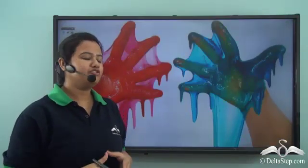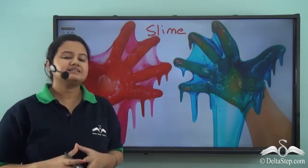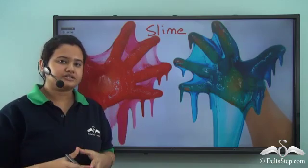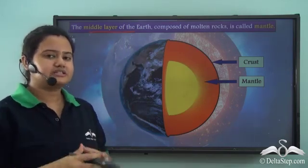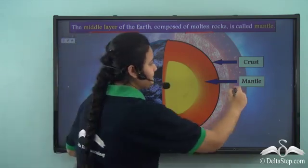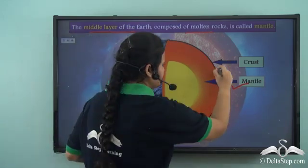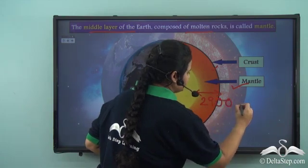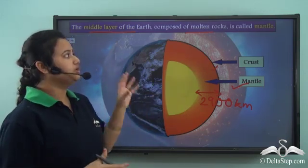Some of you must have played with slime. Slime has a thick and sticky consistency — you can neither call it solid nor liquid; its state is semi-solid. As discussed previously, the middle layer of the Earth is in a semi-solid state, composed of soft molten rocks, and this middle layer is known as the mantle. The mantle lies below the crust, and its average thickness is approximately 2900 kilometers.